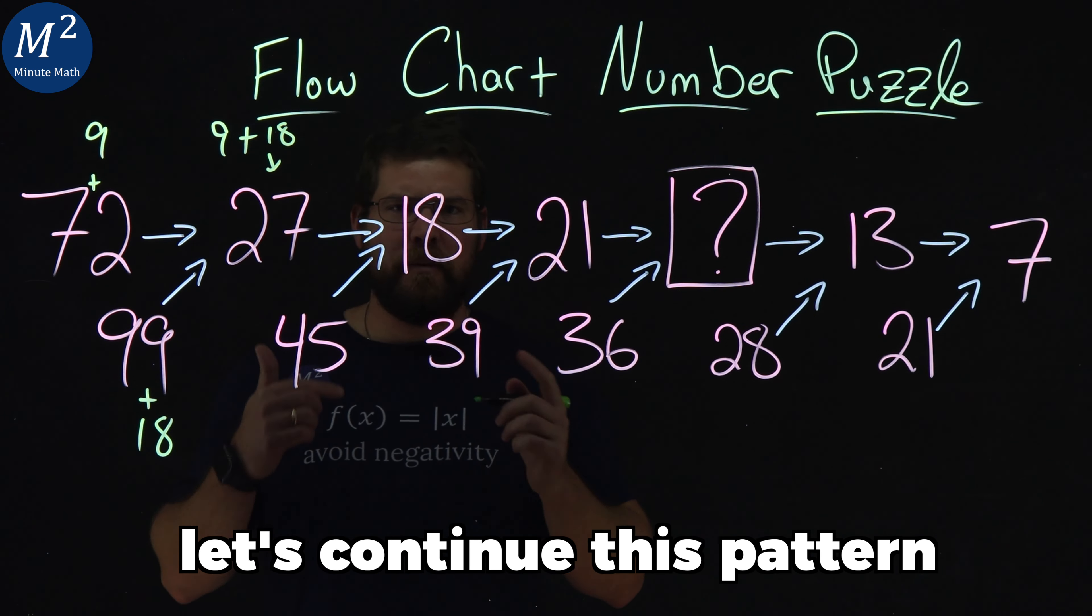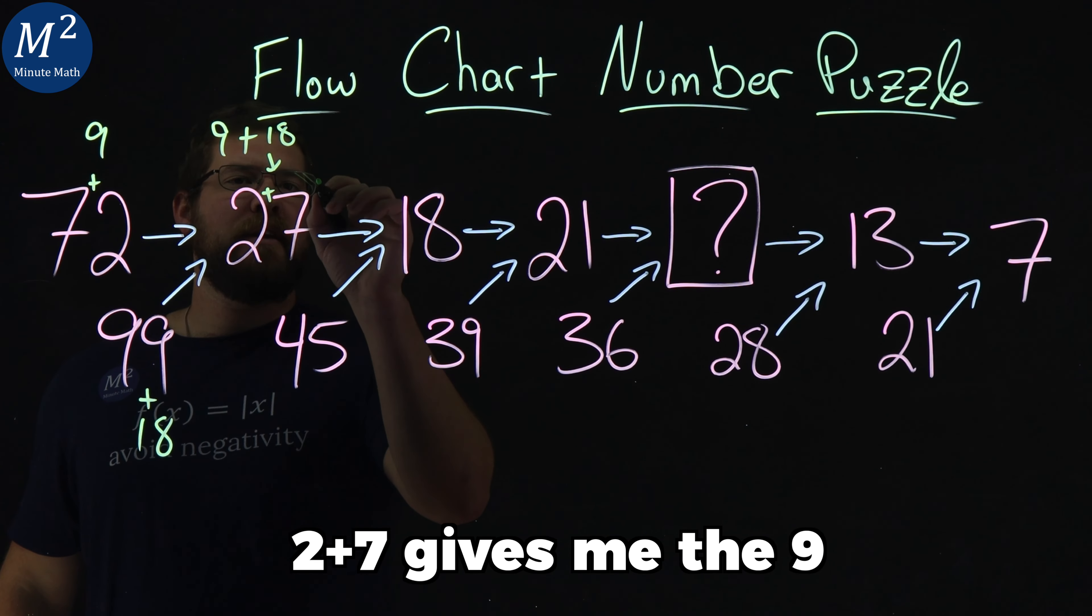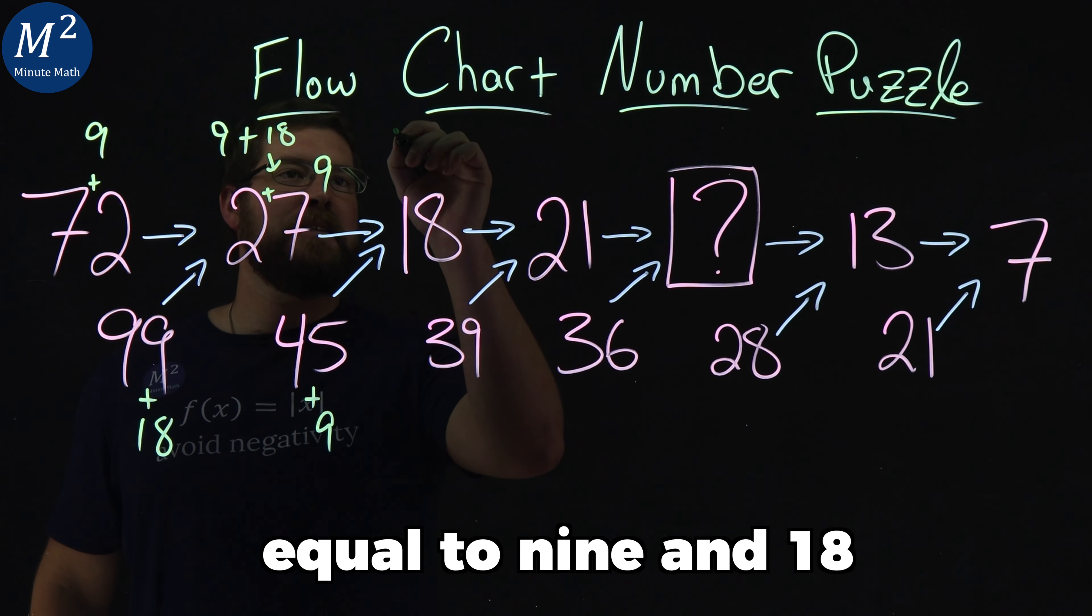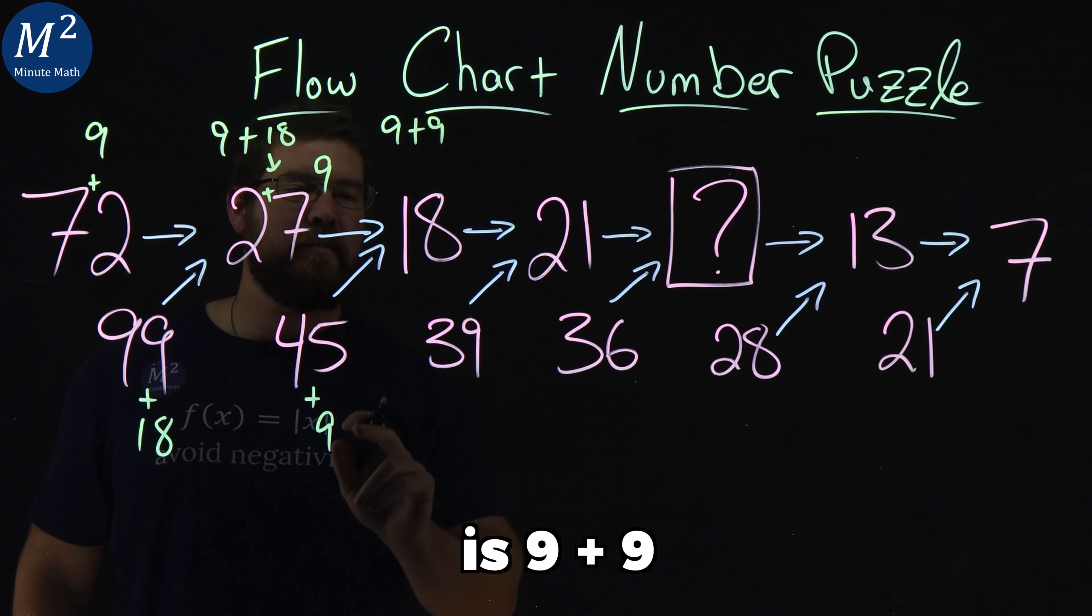Let's continue this pattern. 2 plus 7 gives me the 9, 4 plus 5 is also equal to 9. And 18 is 9 plus 9.